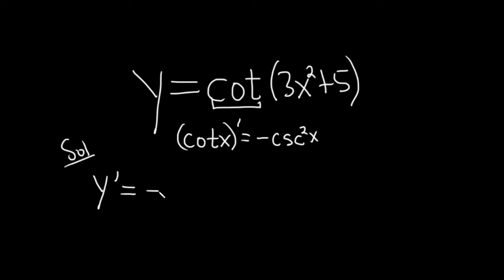So it'll be negative cosecant squared of, and then you just leave the inside piece alone, 3x squared plus 5, and then it's times the derivative of the inside function.